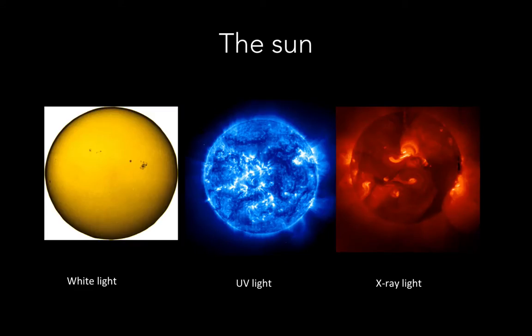Here's an astronomical example with three views of the sun at three different wavelengths. The leftmost image is of the sun in visible light. The middle image is the sun as viewed in ultraviolet light, and the rightmost image is of the sun in X-ray light. Aside from a few sunspots, the visible light image doesn't show much.